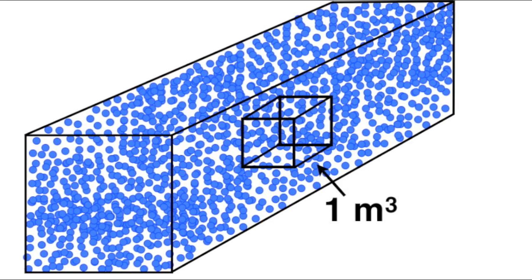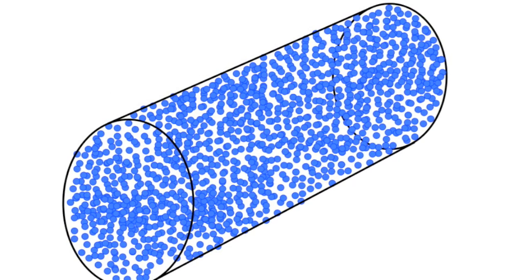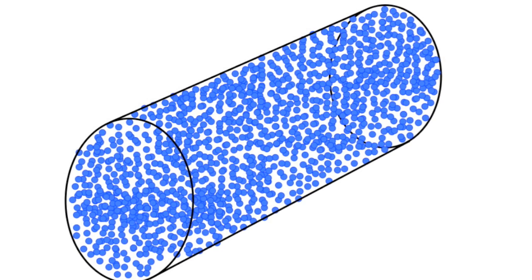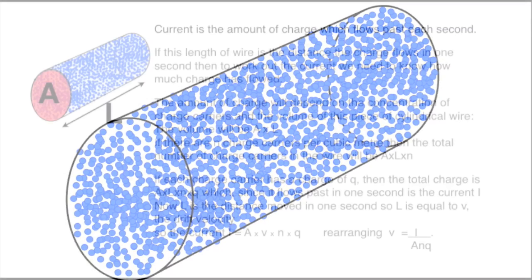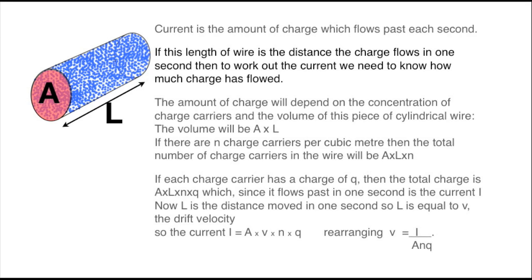If we imagine a piece of wire and magnify it, and that the length of this wire is equal to the average distance travelled by an electron every second. Remember that the current is the quantity of charge that flows past a point every second. And if this length is the distance the charge flows in one second, then to work out the current we need to know the quantity of charge in this piece of wire.